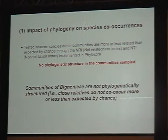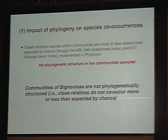We tested whether species within communities were more or less related than expected by chance using NRI and NTI, both implemented in Phylocom. Overall, we found that Bignoniaceae communities are not phylogenetically structured — close relatives do not co-occur more or less than expected by chance. We then tested whether the distribution of floral diversity within communities differed from random, and found that floral diversity did not differ from the null expectation, indicating that competition for pollinators was not driving community assembly.